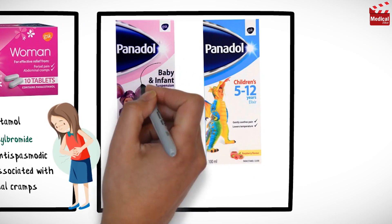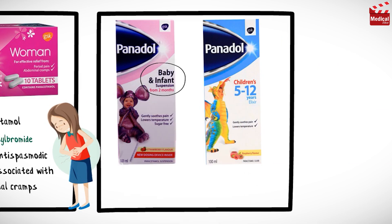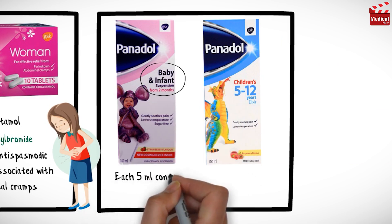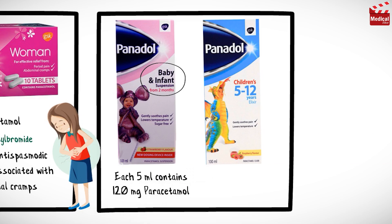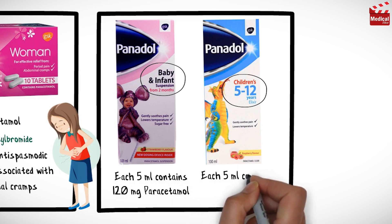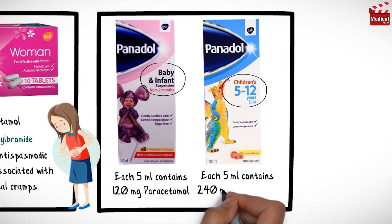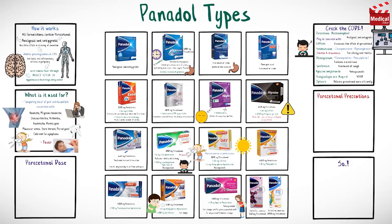Panadol Baby and Infant Suspension, for use from 2 months, contains 120 mg paracetamol per 5 ml. Children's Panadol Elixir, for ages 5 to 12 years, contains 240 mg paracetamol per 5 ml. There are more formulations of Panadol, but now you can read the active ingredients and know how each ingredient works.